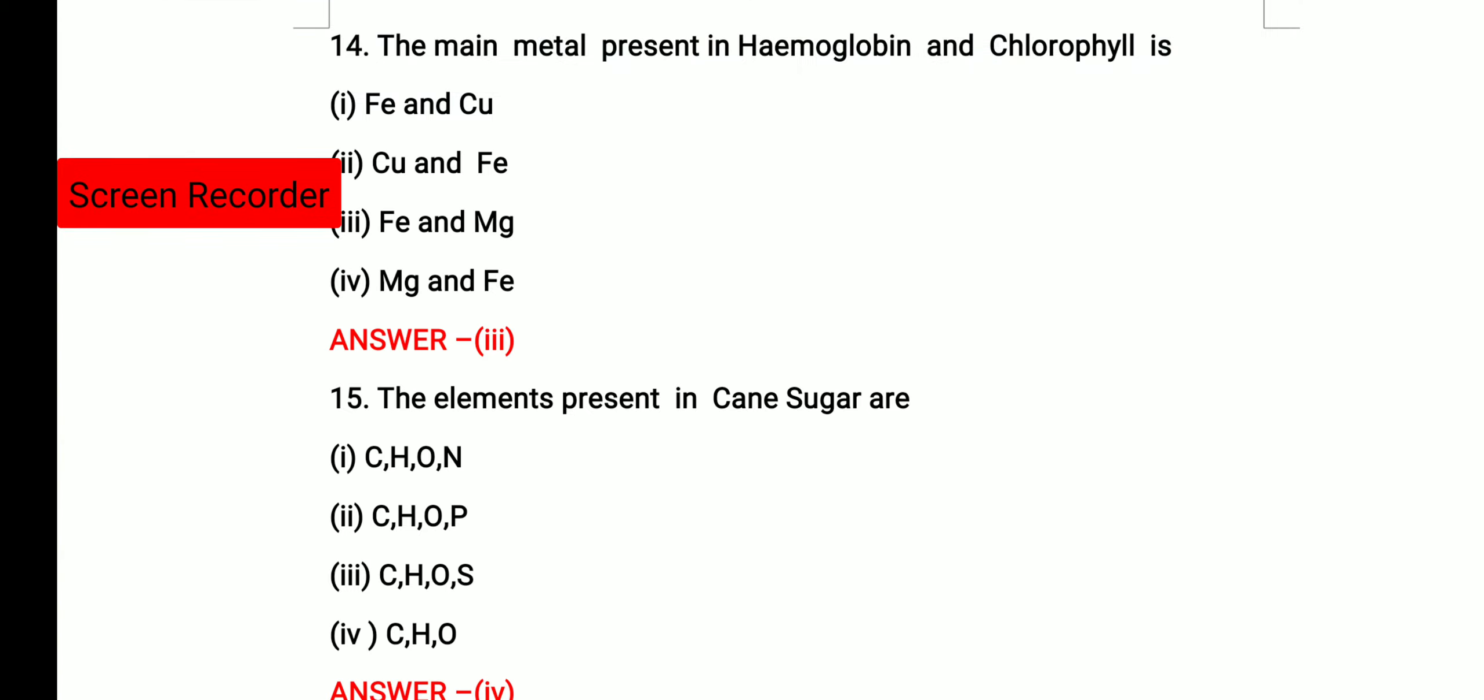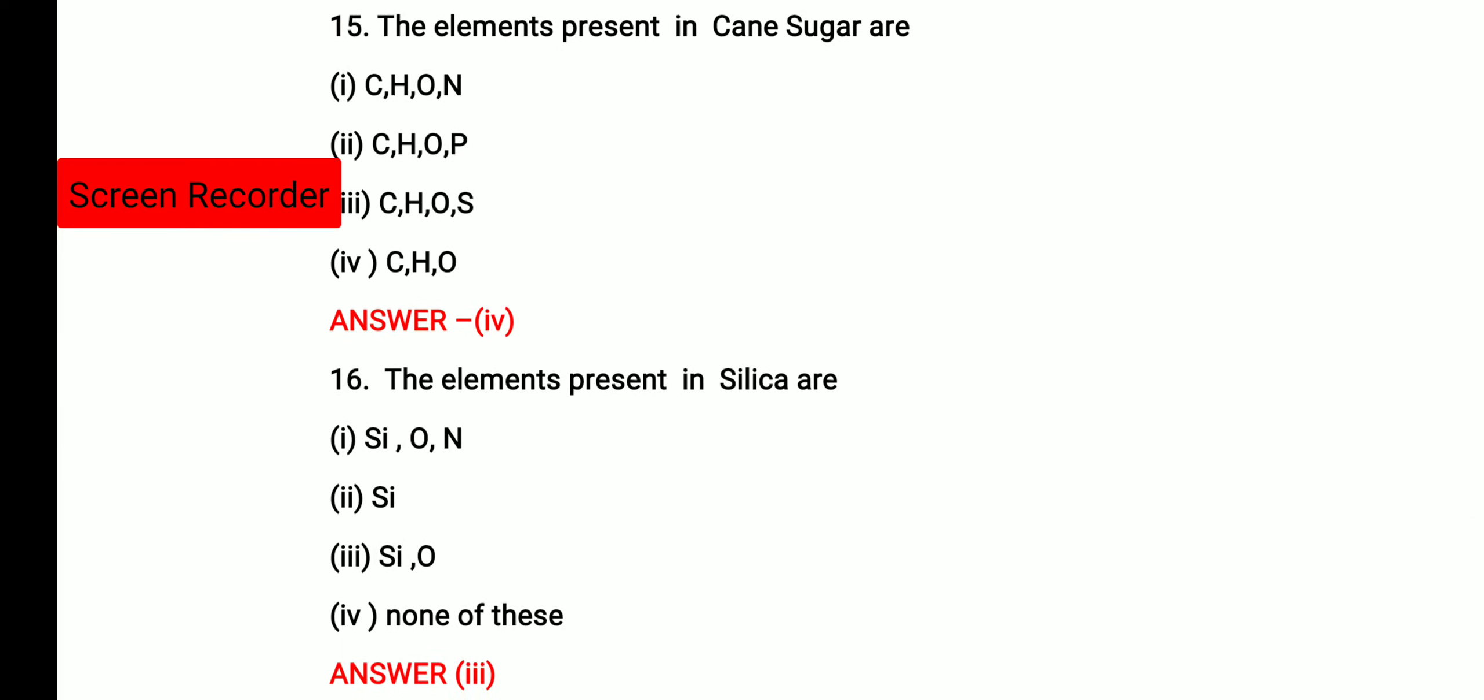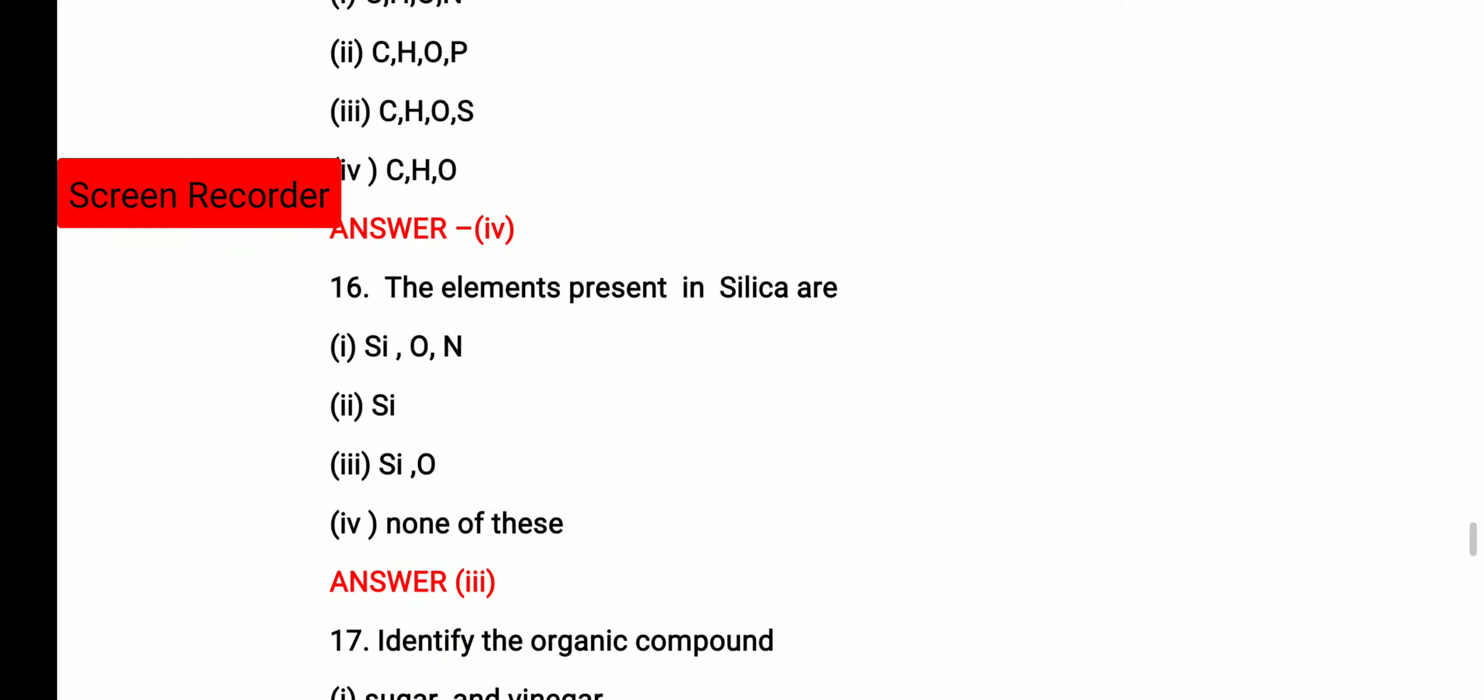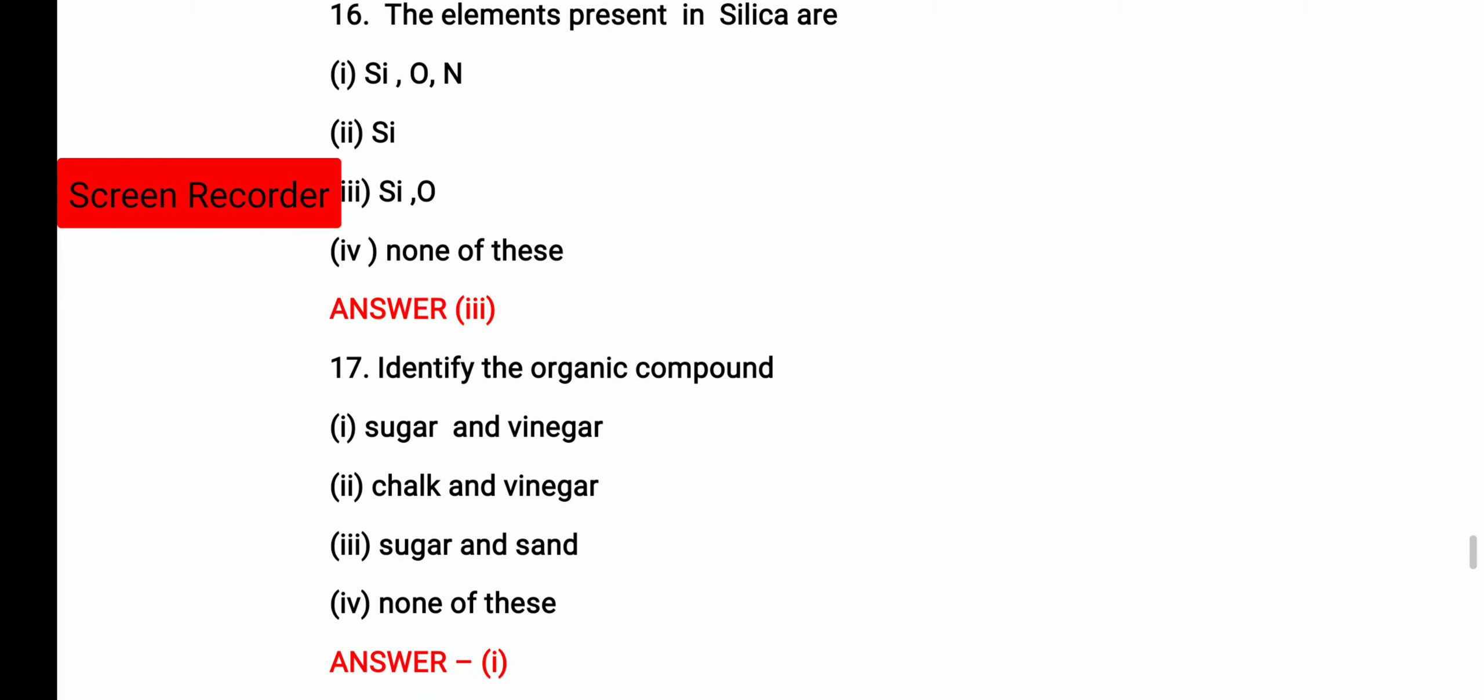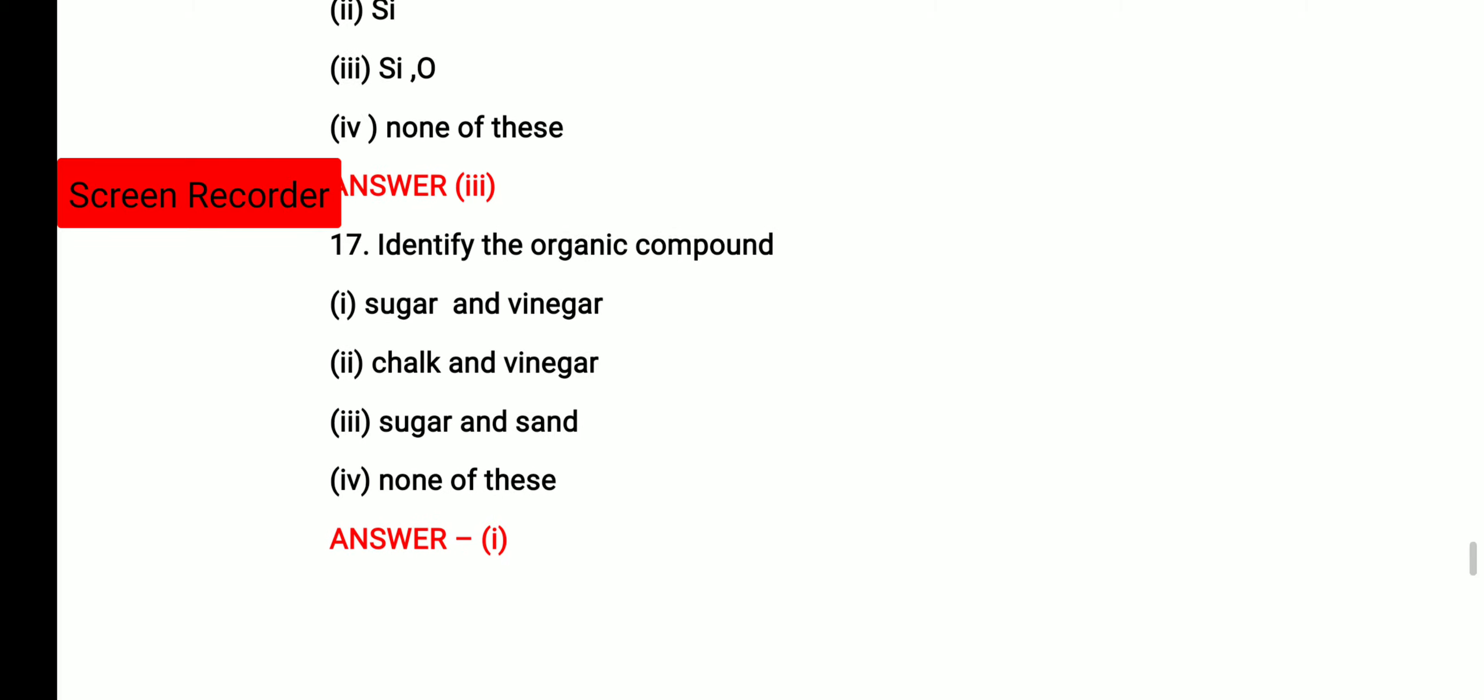Then the element present in cane sugar are carbon, hydrogen, oxygen, nitrogen, carbon, hydrogen, oxygen, phosphorus, carbon, hydrogen, oxygen, sulfur, carbon, hydrogen and oxygen. So option 4 is correct. That is carbon, hydrogen and oxygen. Then the elements present in silica are Si and O. That is option 3 is correct. Identify the organic compound. You know the organic compound is obtained from the living world. They are basically composed of carbon, hydrogen and oxygen. So sugar and vinegar are the organic compounds. So first option is the correct option.